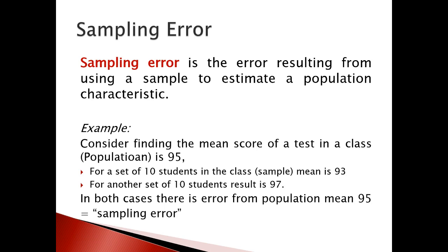Let's see an example. Suppose the mean test score of the students in a class is 95. Rather than calculating the mean from the whole class, we are going to consider a set of 10 students. Then we got the mean as 93. If we consider another set of 10 students, we got the mean as 97.